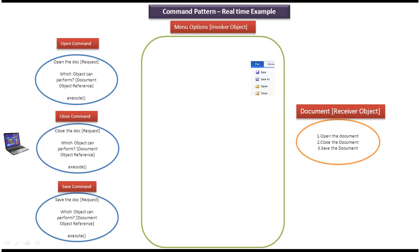Here you can see various command objects. The first one is the open command — it has the request to open the document. The receiver object is the document object, and the execute method will call the document object's open method in order to open the document.